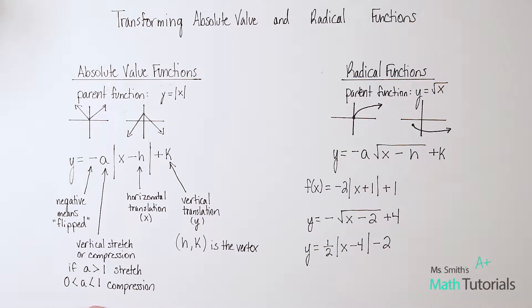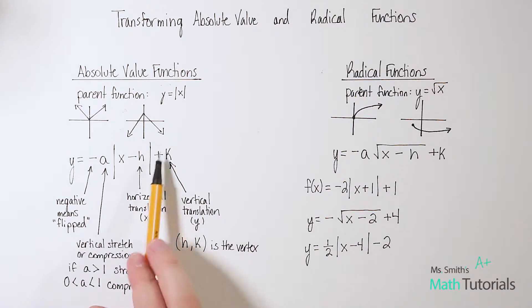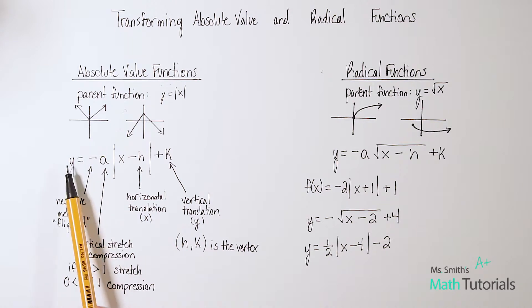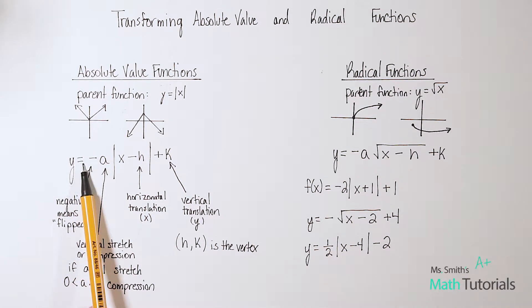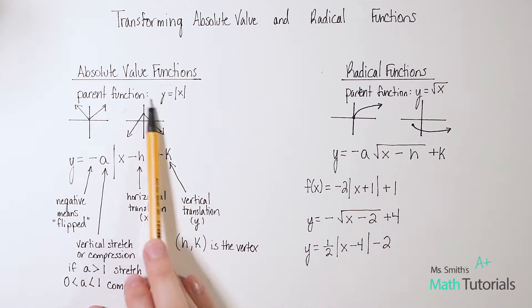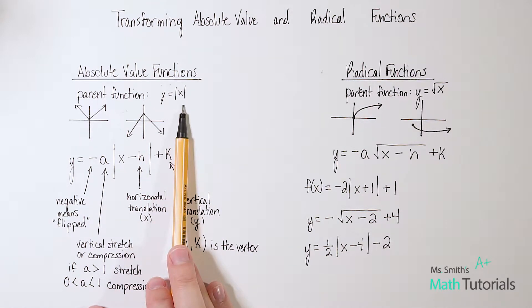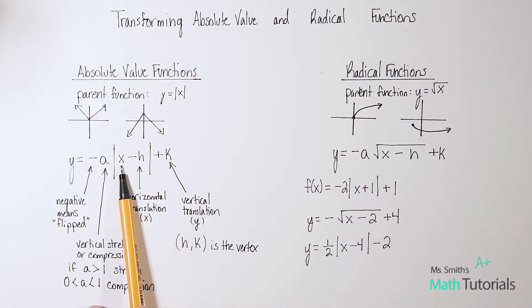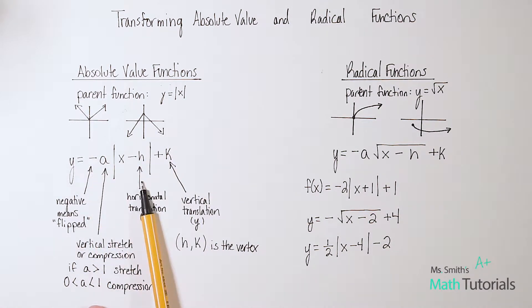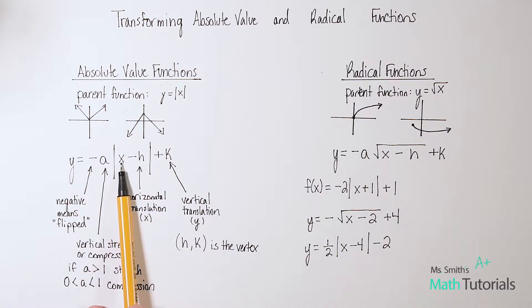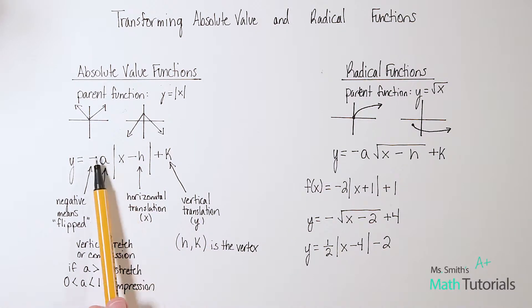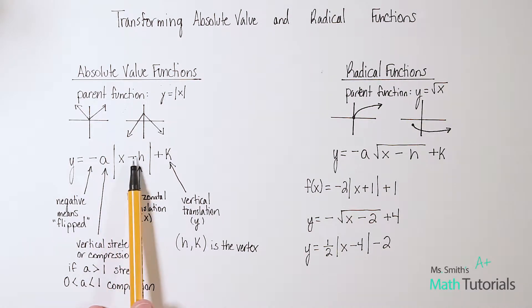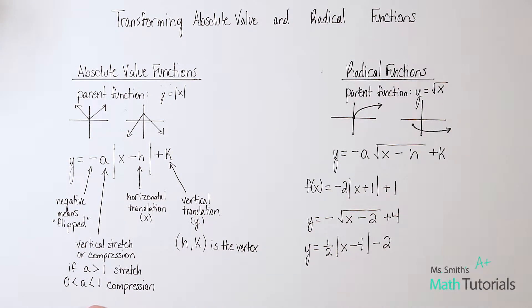When we look at how something could possibly translate within an absolute value function, this is really important to memorize. We have y equals — remember our parent function is just y equals the absolute value of x. Here we've added a lot of things: the x that was originally there, but also a negative 'a' outside, a 'minus h' attached to the x, and a 'plus k' on the outside of the absolute value.